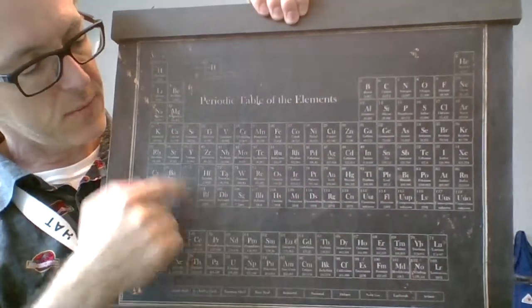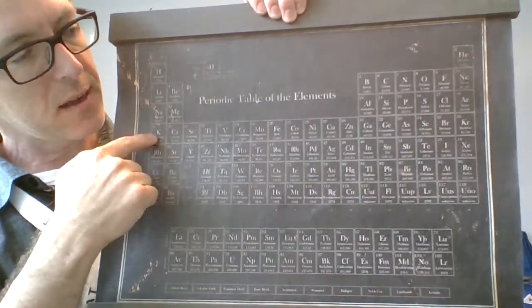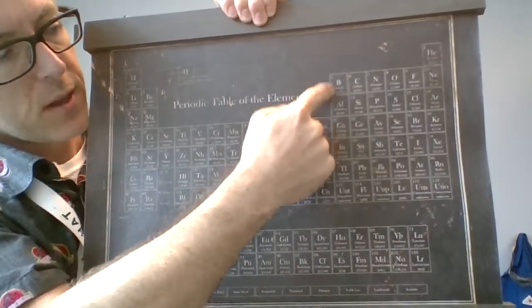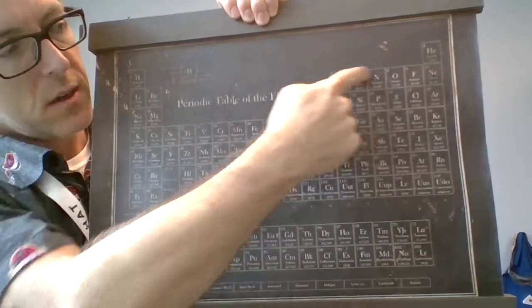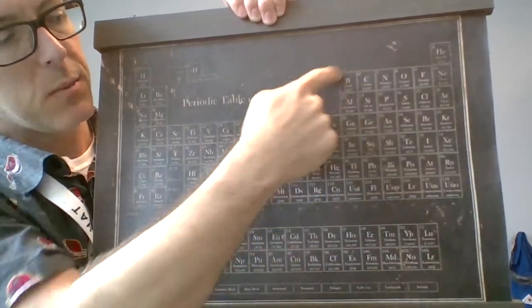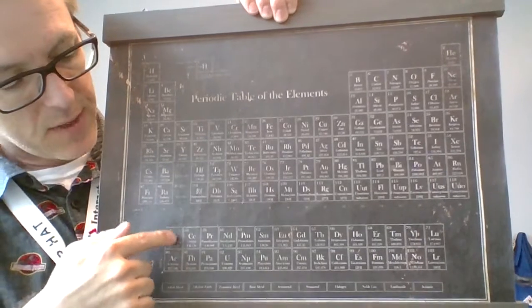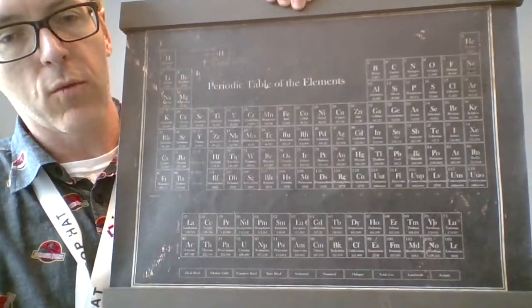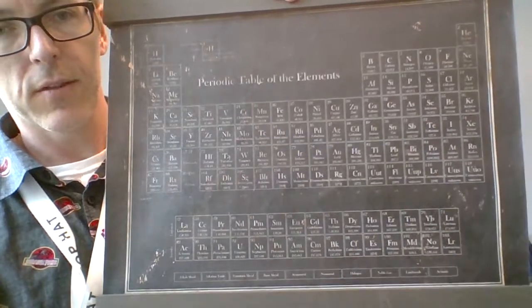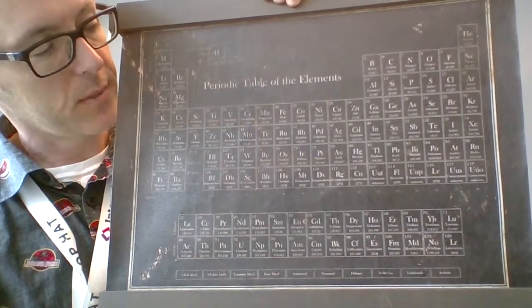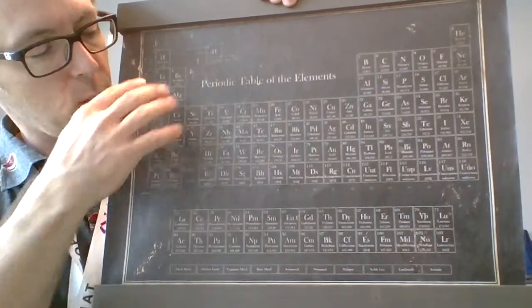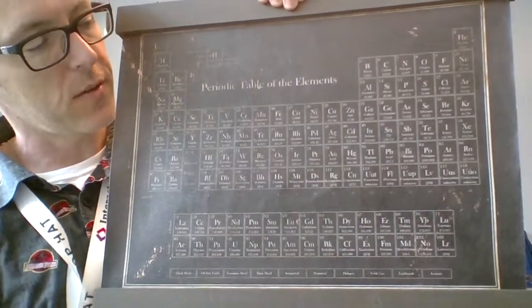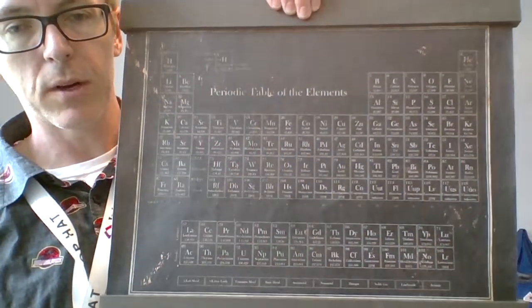D for dog, s for Sally, d for dog. Then we've got this rectangle over here — ignoring helium — that's the p block, p for Paul. And down here we have the f block, which we don't really use in Chem 65; we worry about that later. So mainly we look at the s and p block in Chem 65.